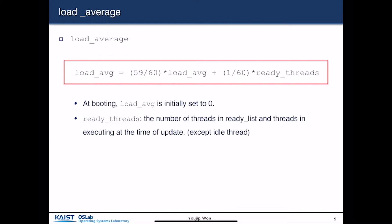Load average represents how busy the system is. At boot time, load_average is initially set to zero. Load average is a weighted average of load_average and ready threads, where ready_threads is the number of threads in the ready list plus threads currently executing at the time of an update. Load average is computed as: (59/60) times load_average plus (1/60) times ready_threads. All these values play a critical role in determining the fairness, efficiency, performance, and throughput of the BSD CPU scheduling algorithm.